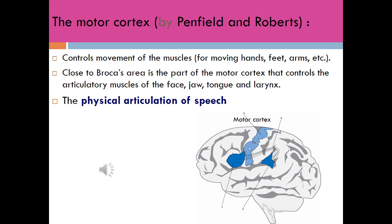Any damage to this part of the brain will result in speech comprehension difficulties. Another part is called the Motor Cortex, which is responsible for the physical articulation of speech. It controls movement of the muscles — moving hands, feet, arms, etc. The part of the Motor Cortex closest to Broca's area controls the articulatory muscles of the face, jaw, tongue, and larynx.